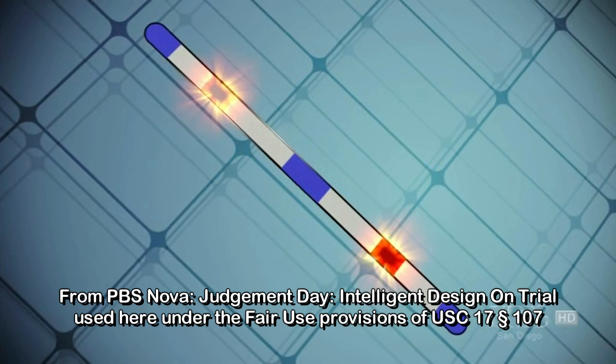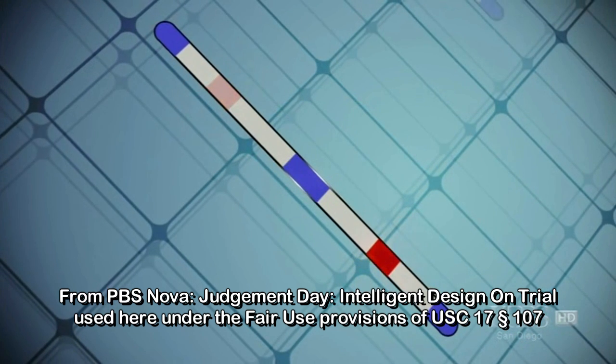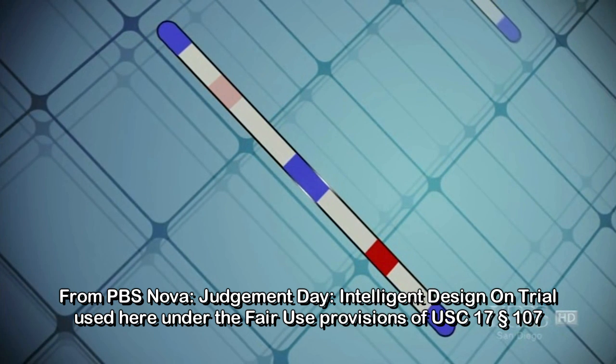Moreover, there would have to be not one, but two centromeres, and one of the centromeres would have to be deactivated. This is a very specific, detailed, and nuanced prediction, and if it turned out to be any other way, evolution would be a theory in severe crisis.